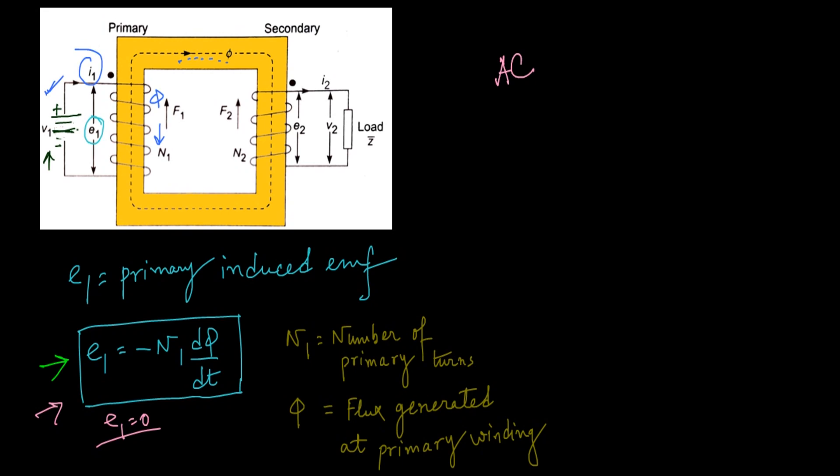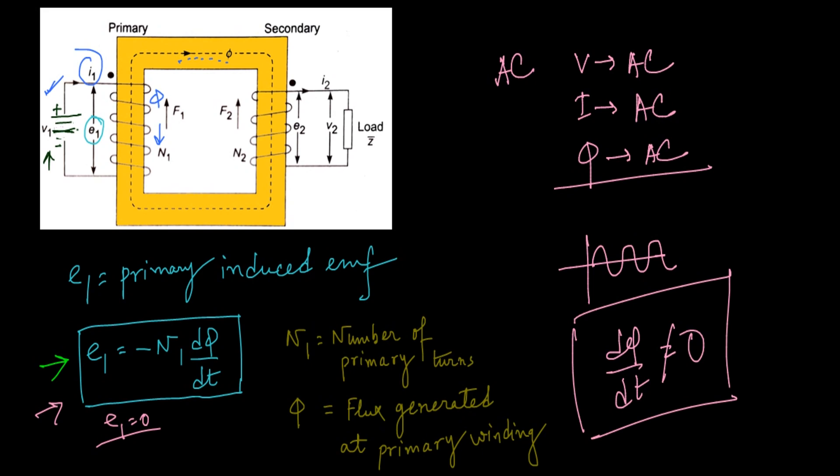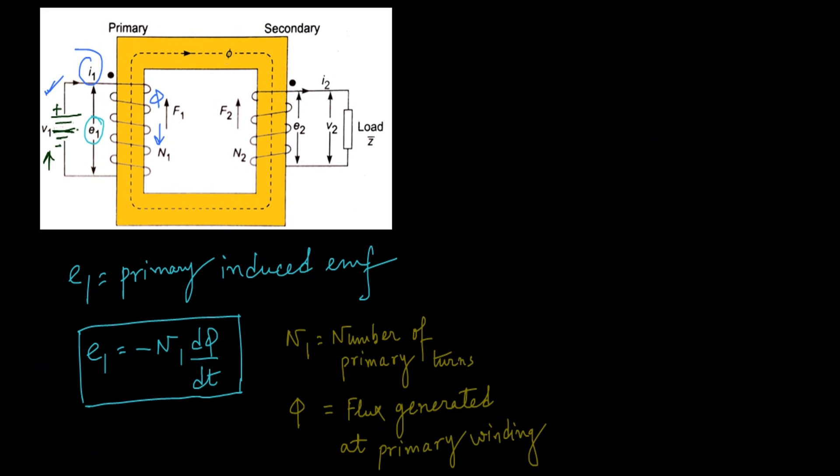In case of AC system, the applied voltage V is AC, so the current given by the supply voltage is also AC, so the consequent flux is also AC. That means a flux which is fluctuating in nature, that's why dφ/dt value is never equal to 0, that's why we are getting the induced EMF.